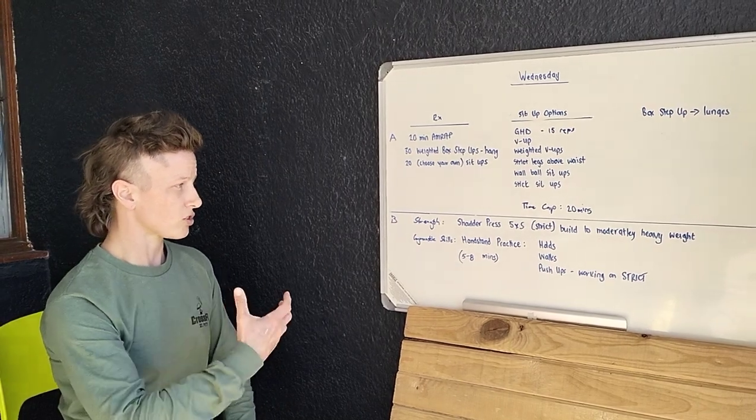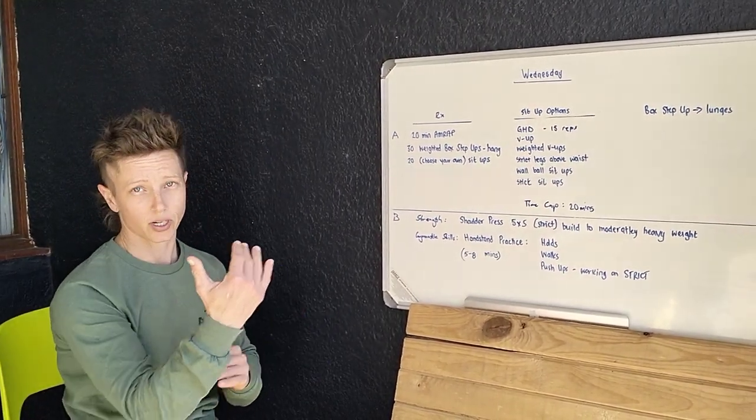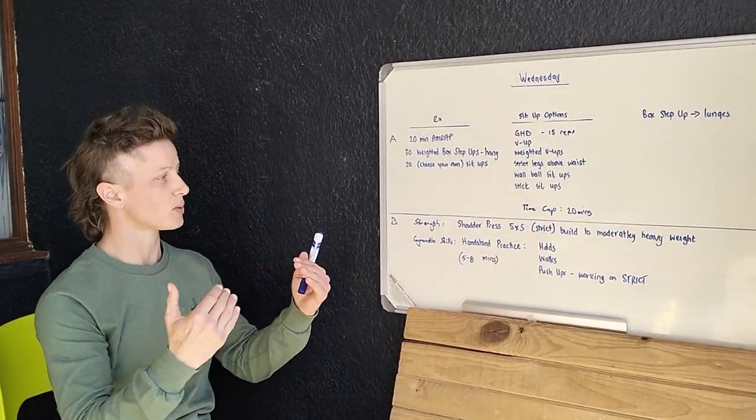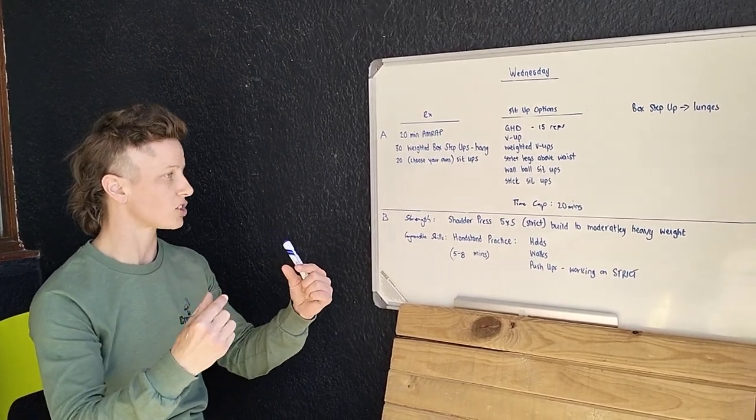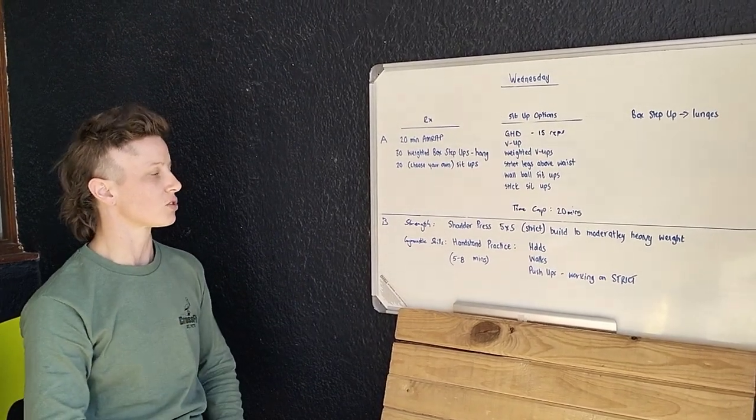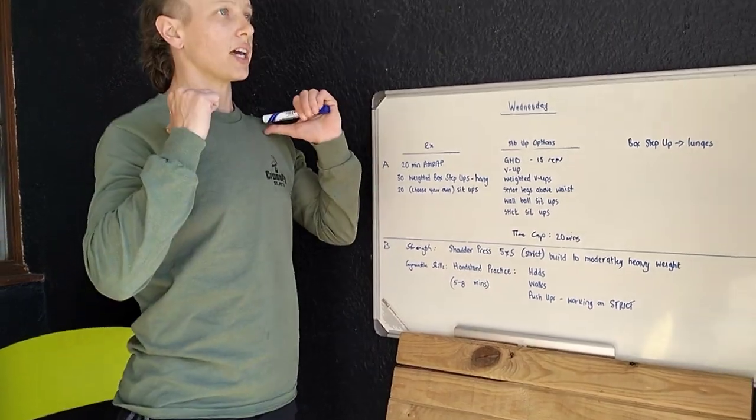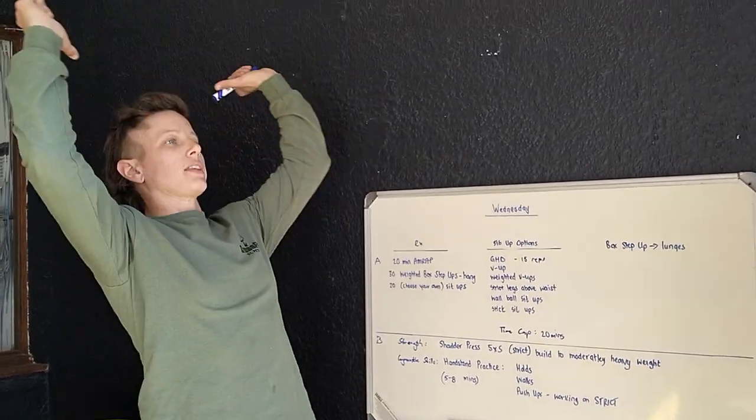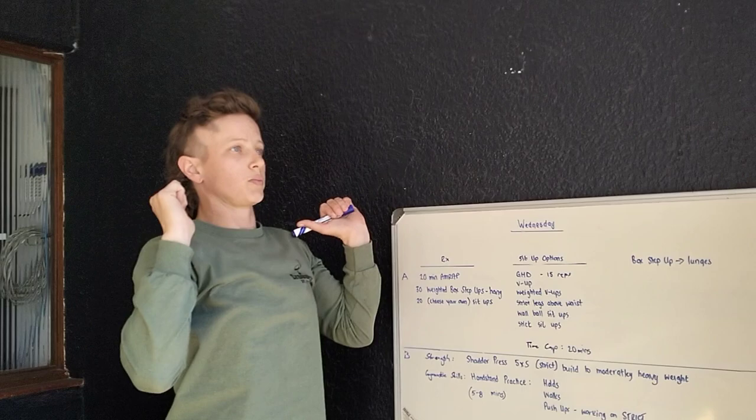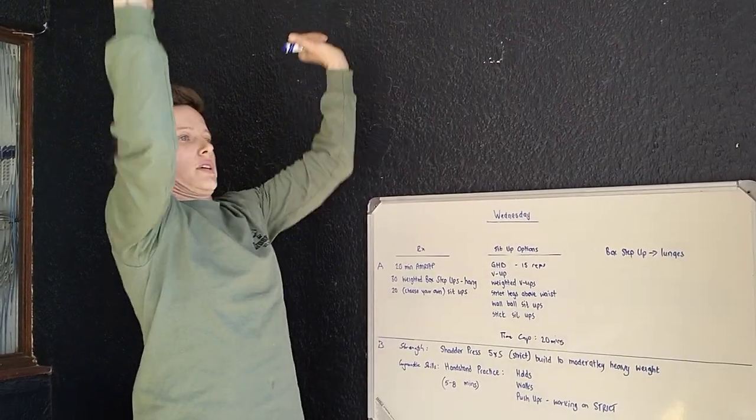Making sure that with the strict shoulder press we can't go up too quickly, too soon. As we're increasing, we're increasing in that lower weight range, sticking to good form. What we don't want to see is a dip forward and then an over-extension backwards. It is purely head back up and down again.